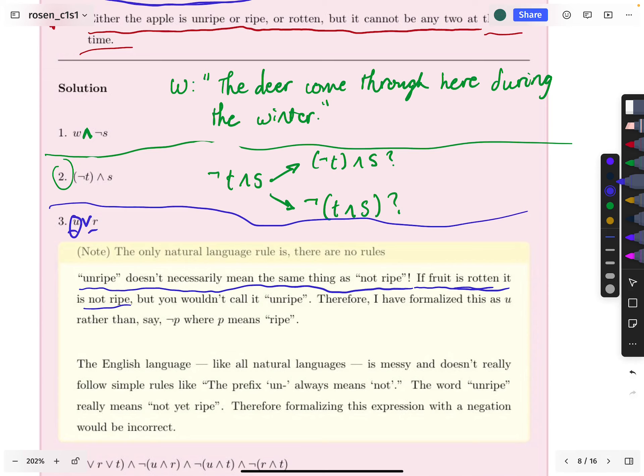And when it's rotten, it is neither ripe nor unripe. It is in a different and special state of rotten. And so you wouldn't call that unripe, right? So in any case, what I'm arguing for here is that calling unripe the negation of ripe is actually technically wrong. Unripe really means something more like not yet ripe. And therefore, just the simplest, most easy, obvious way to handle this complication is just to give unripe its own letter.